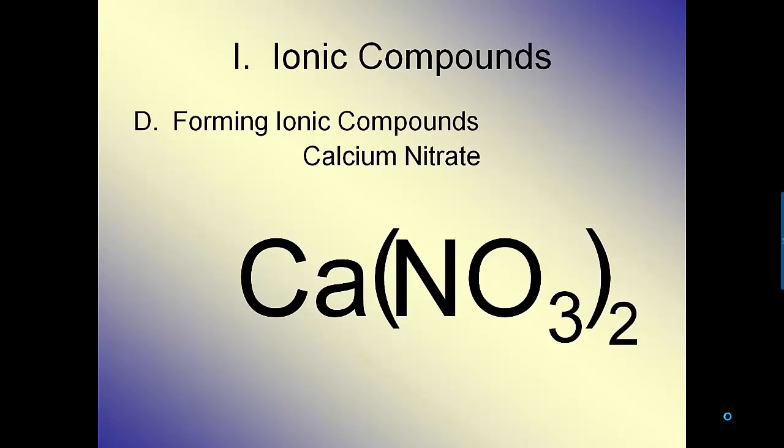Now you can see that the two outside the parentheses is actually telling me that there's two of everything inside. So I have one calcium and two whole nitrates. That's actually about as complicated as it gets at that point. Now what I want you to do is go to the ion worksheet and start practicing your ions over and over again. I think there's about 40 of them on there, so get good practice on them.